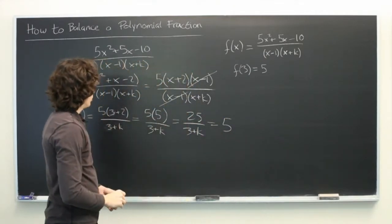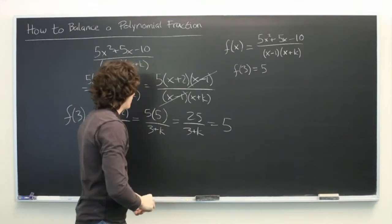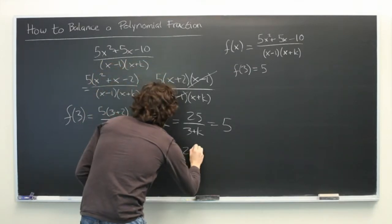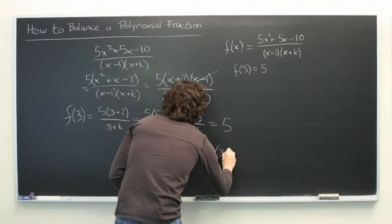From here we can multiply both sides by (3 plus k). So we get 25 equals 5 times (3 plus k).